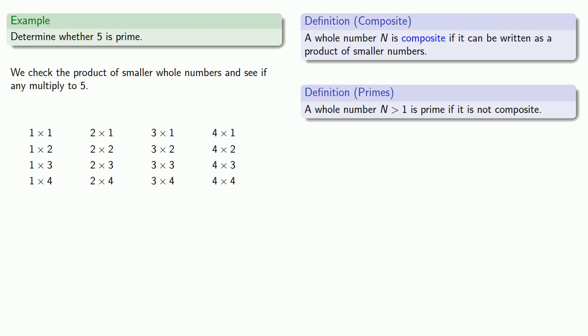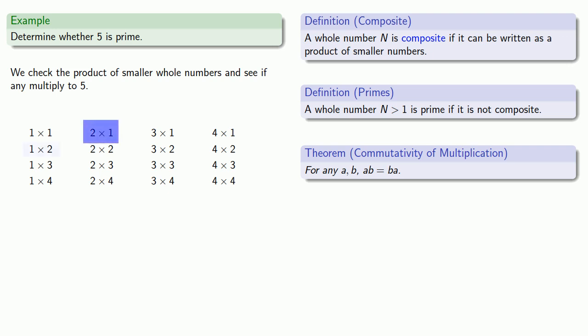Well, maybe not. One useful thing is that multiplication is commutative, so that A times B is the same as B times A. So if I check 2 times 1, I don't need to check 1 times 2. So about half of these products I don't need to worry about. But we do need to check all the other products. And we see that none of these is equal to 5. And since no product of smaller numbers is equal to 5, 5 is prime.